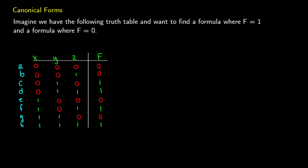We are going to cover canonical forms — things such as sum of products and products of sums, also known as conjunctive normal form and disjunctive normal form.